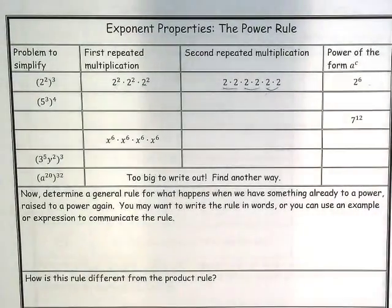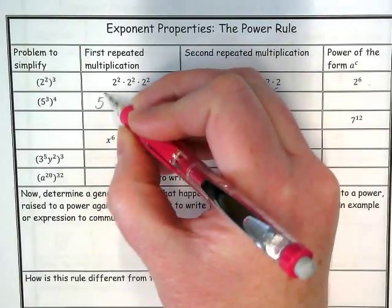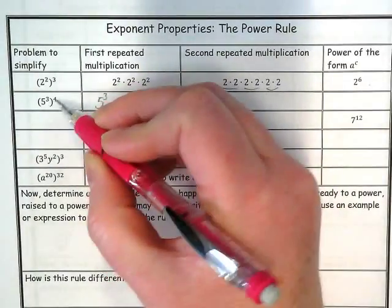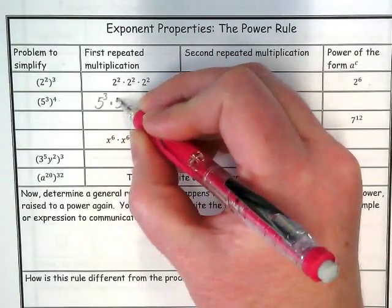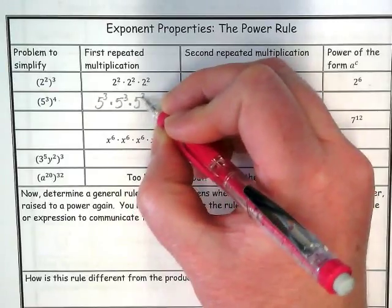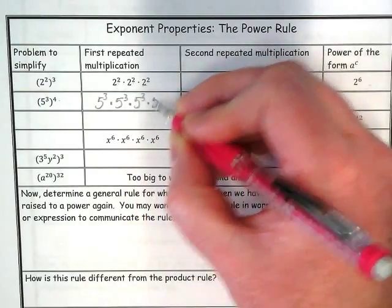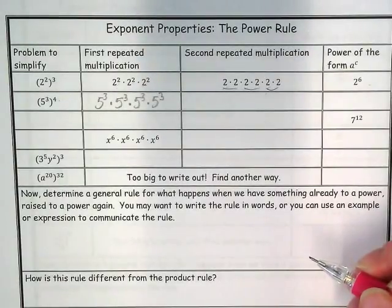So let's do five to the third. Five to the third, how many times? Four times. And yes, you might be starting to see what the shortcut is, but we want these as proof sheets, so we're not going to just jump to the obvious yet. Okay, there's a lot of 5's we have to write.